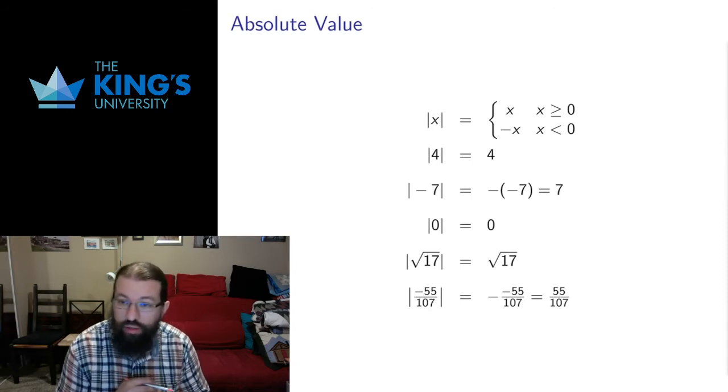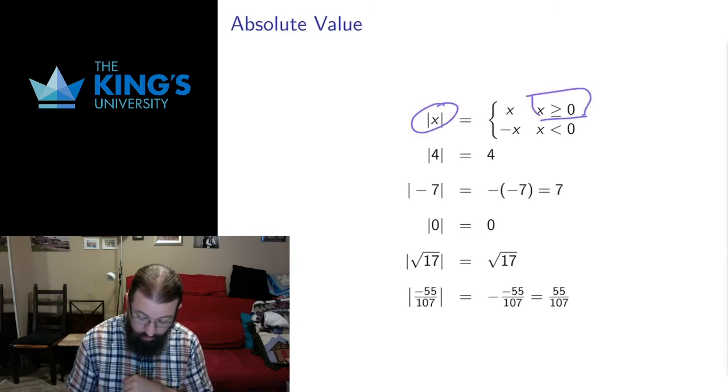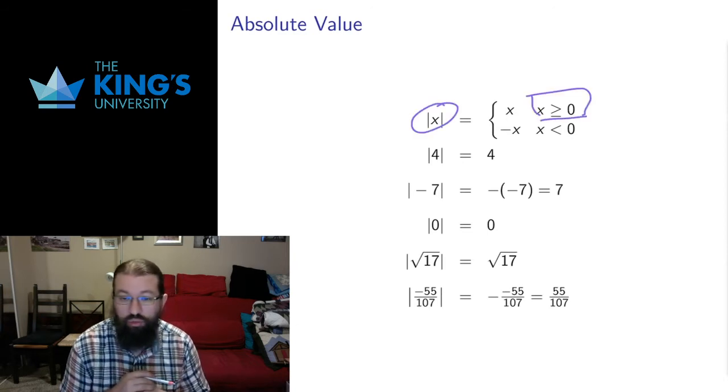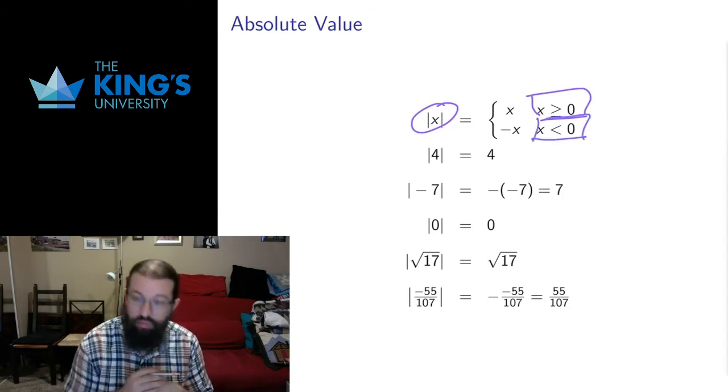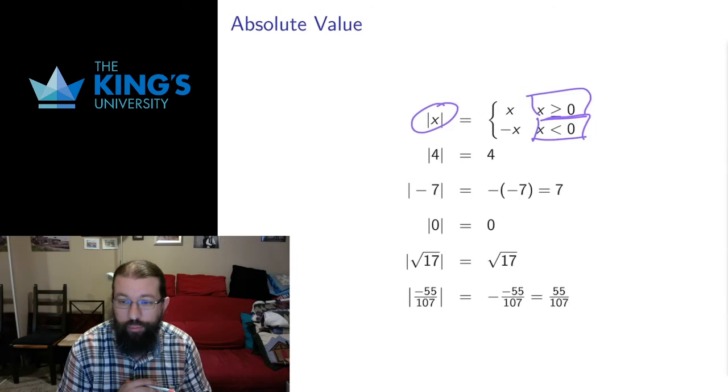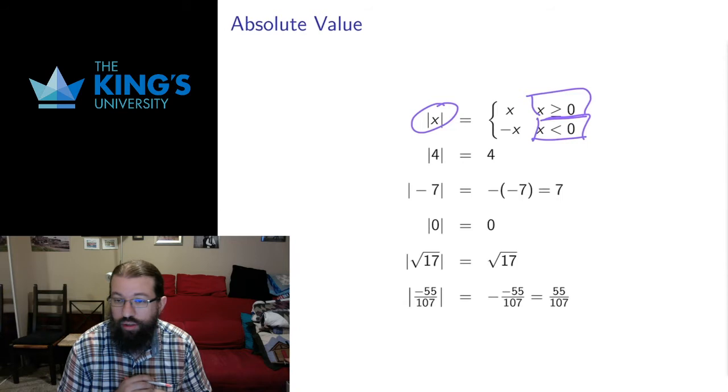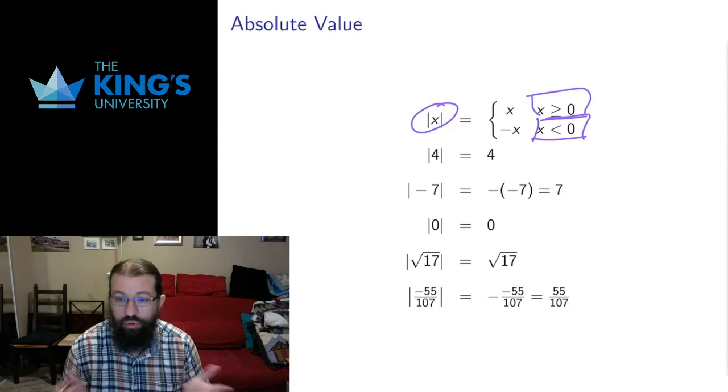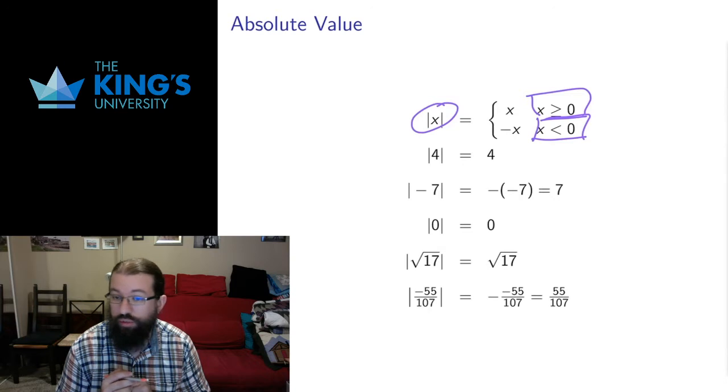I'm going to use piecewise function notation here. If that's not familiar, I'll talk through it. The absolute value of a number, if the number is positive, does nothing. The absolute value of a number is just the number itself. If the number is negative, if the number x is less than 0, then we multiply by negative 1, which I write as negative x, and that makes the negative number positive. So the absolute value of something, if it's positive, leaves it alone. If it's negative, it just makes it positive.